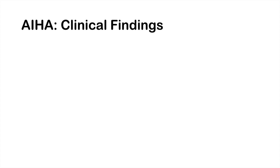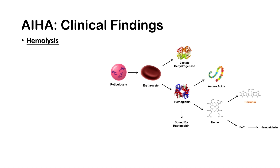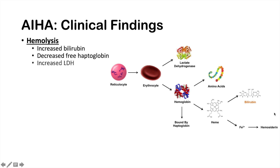Clinical findings of autoimmune hemolytic anemia include features common across all three subtypes. Hemolysis is the most common finding. When an erythrocyte breaks down, we see increased LDH, increased hemoglobin, increased bilirubin from heme breakdown, and decreased free haptoglobin because hemoglobin binds to it. These markers — increased bilirubin, decreased free haptoglobin, and increased LDH — are seen in any cause of hemolysis.